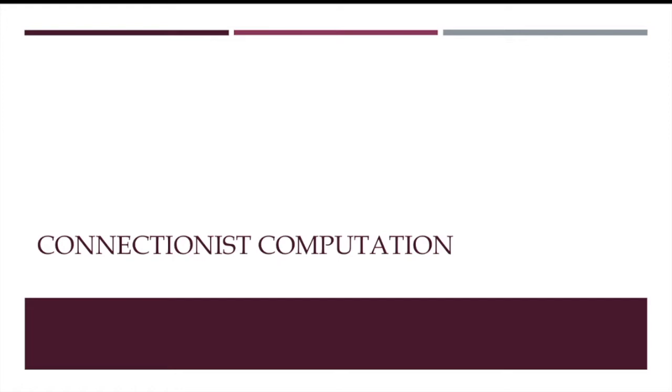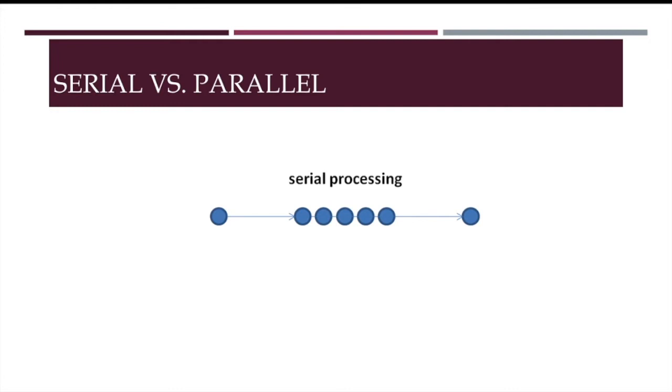Let's start with the connectionist style of computation. Traditional digital computers are serial processors since they perform one computation at a time. The result of a particular computation can then serve as the input to a second computation, and this is the starting point for another computation and so on. If you see it as a physical symbol system, a traditional computer will take individual symbols or strings of symbols as inputs, then apply a set of algorithms, and then produces more symbols or symbol structures at its output.